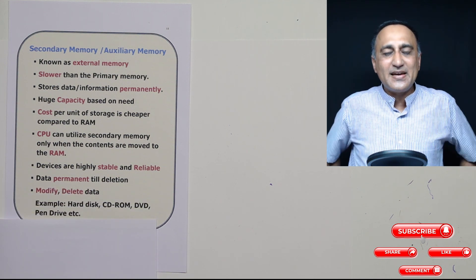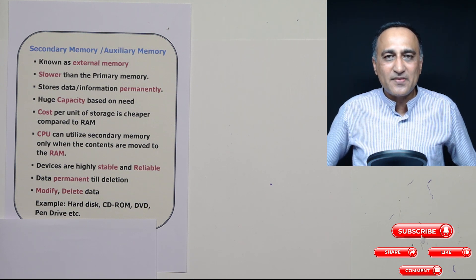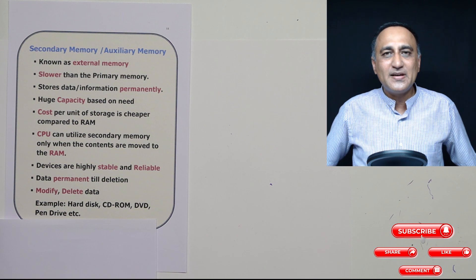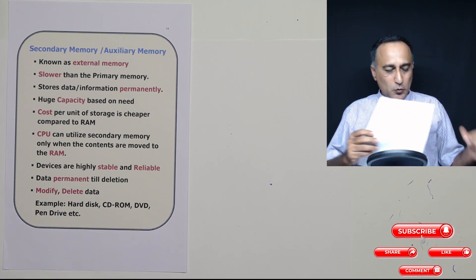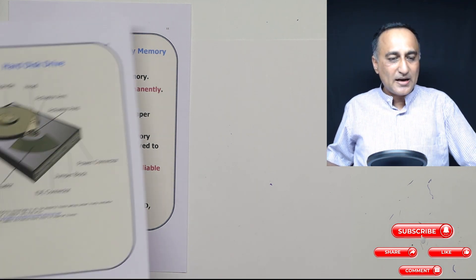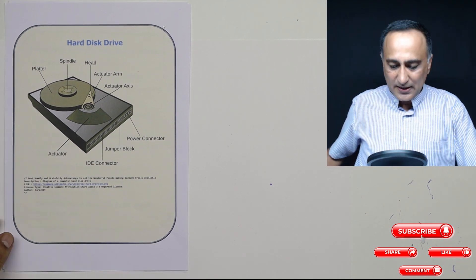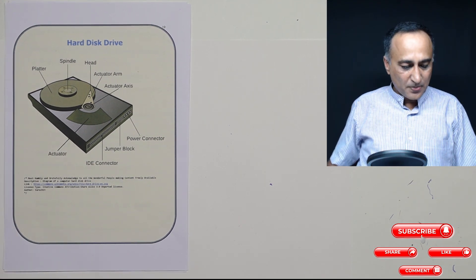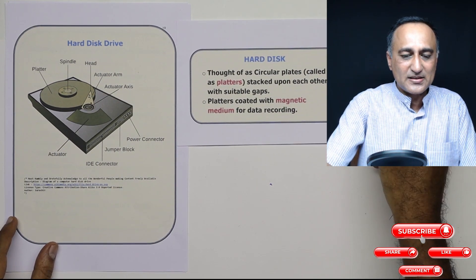Examples of secondary devices are hard disk, CDs, DVDs, and pen drives—all excellent examples of secondary memory devices. Now what I shall do is use this opportunity to tell you a little bit about the hard disk, which is the most common secondary memory used either in your laptops or PC.